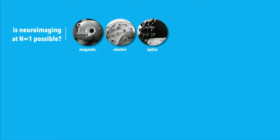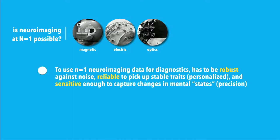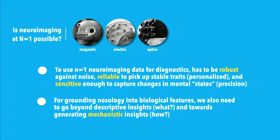Can we extract reliable insights from just one person and then use them? To do that, you need to make sure whatever insights you come up with are robust against noise, are reliable, and sensitive enough to pick up the state changes you're looking for. But most neuroimaging technologies tell you what's happening — they may not give you insight about why or how it's happening. So they're descriptive at most, and not giving you insight about the mechanisms behind it.